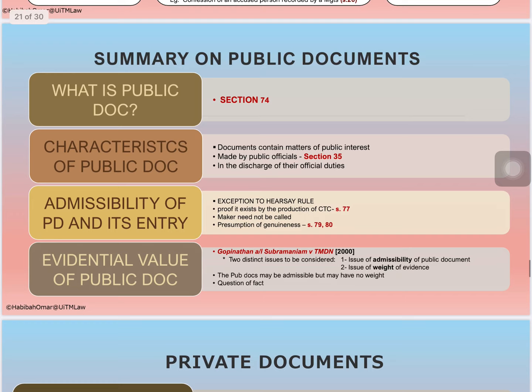In summary, when talking about documentary evidence: the definition is under section 74. The characteristics of public documentary evidence are that it must contain a public interest element, be made by public officials, and the public official must write the document in the discharge of his duty. As to admissibility, the moment a document is regarded as a public document, it becomes an exception to the hearsay rule — there is no need to tender the primary original document, a certified true copy suffices, the content is deemed to be true, and the maker need not be called.